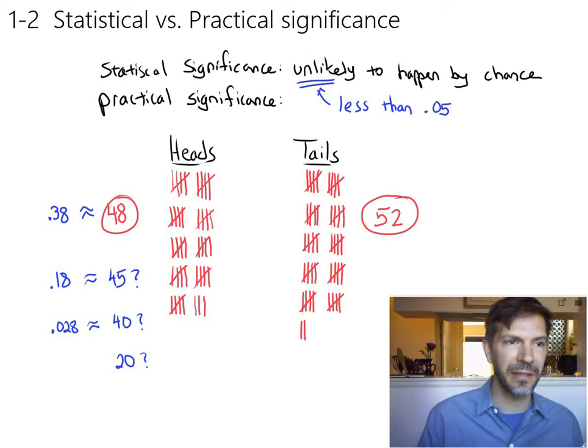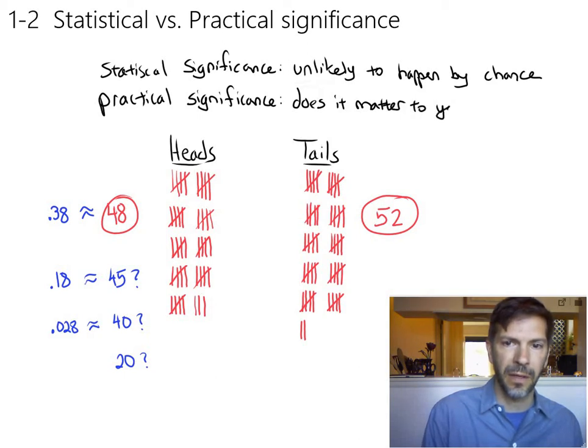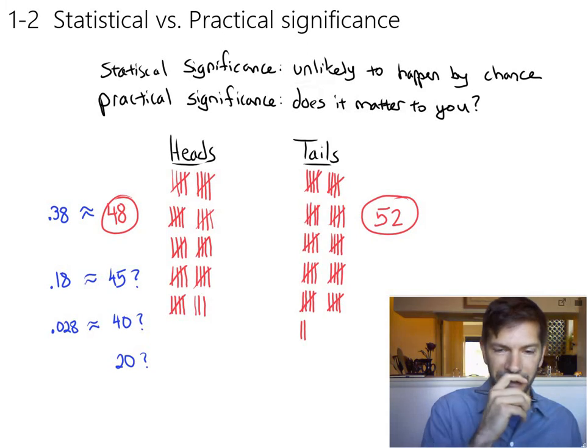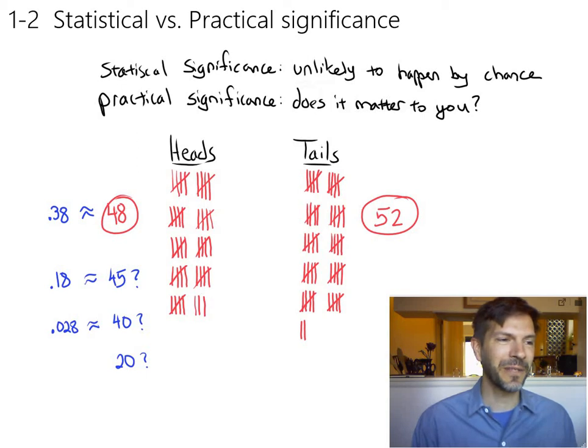So for practical significance, for that we're just going to say does it matter, and particularly doesn't matter to you. Do you think it's meaningful? And this will always be entirely an opinion question. But since this is a nutrition and statistics combined class, at one point we'll talk about losing weight. And I might say to you, I've got this diet. I guarantee it works. You only have to spend $3,000 and you only have to really bust your butt for a year. And I can guarantee you're going to lose two pounds.